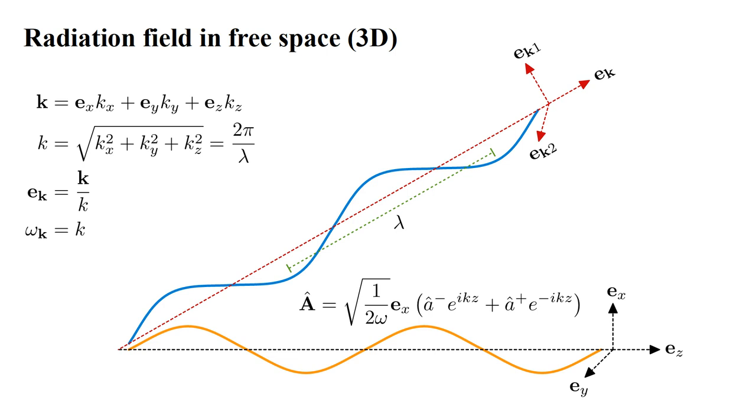The propagation constant equals 2π over the wavelength λ, where the wavelength is the distance between wave peaks or valleys.